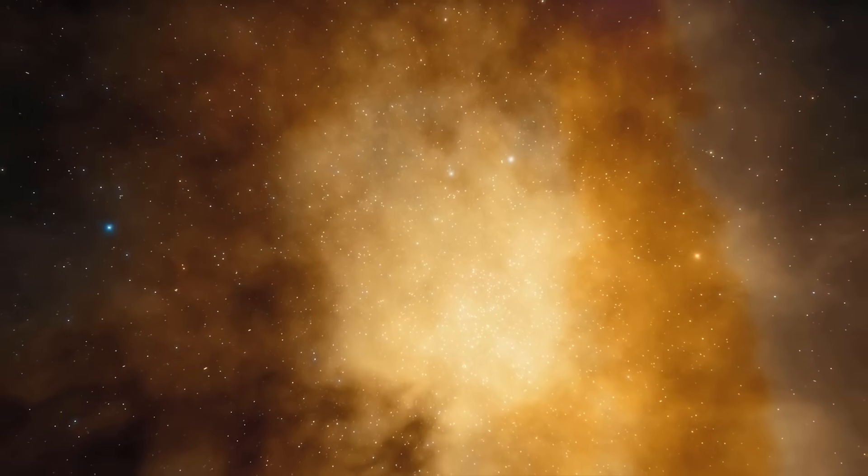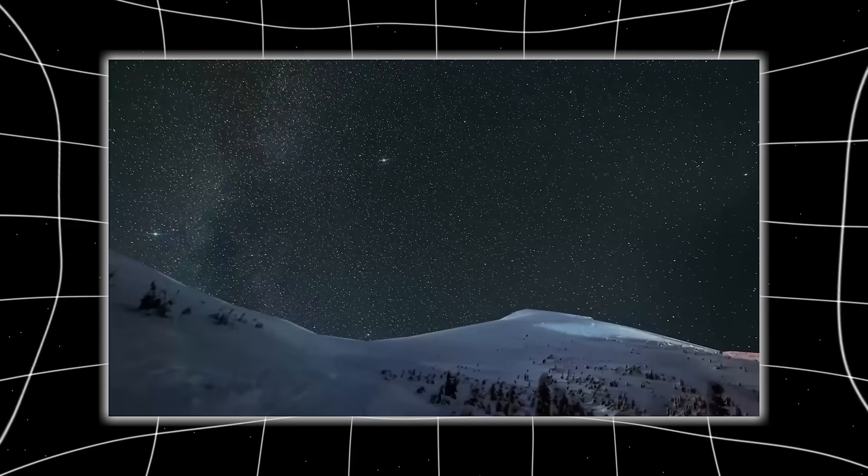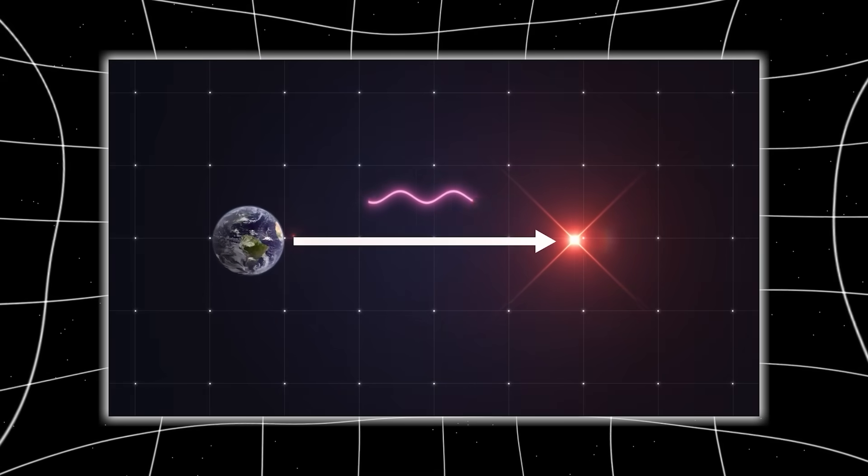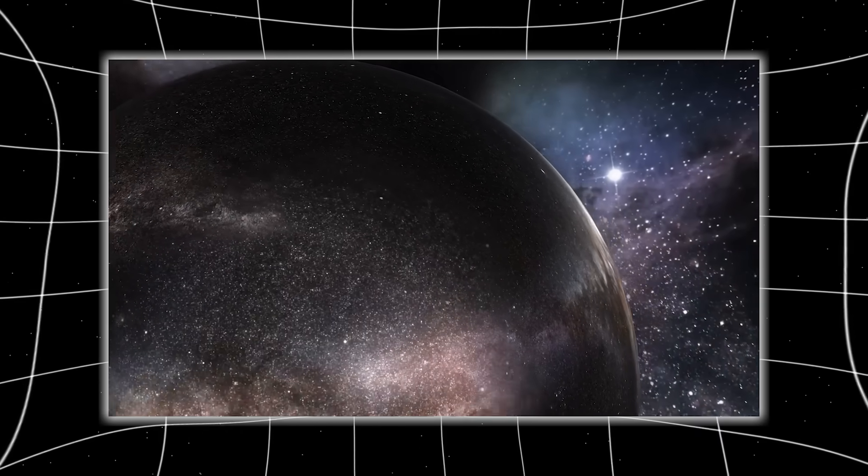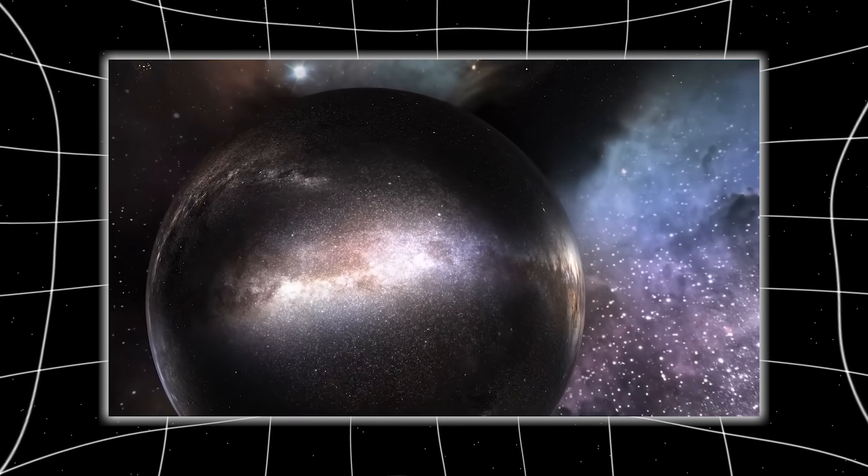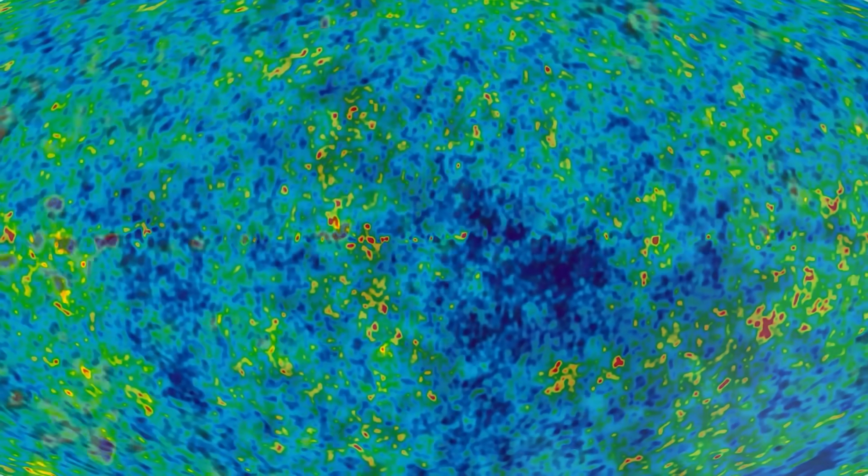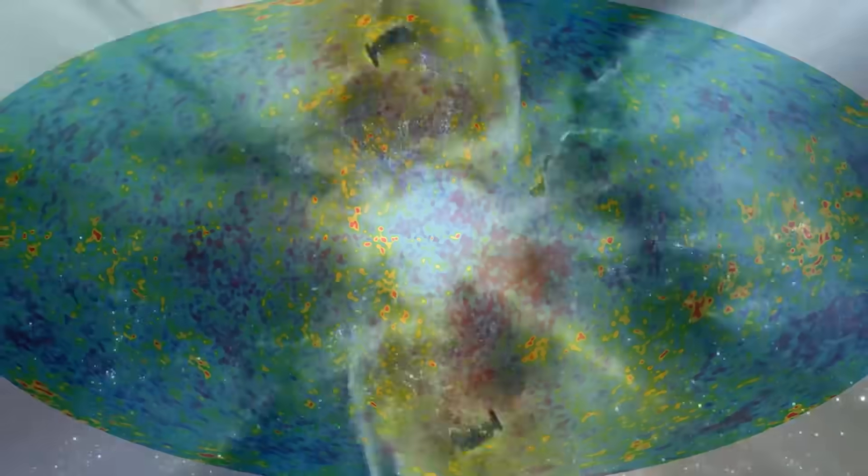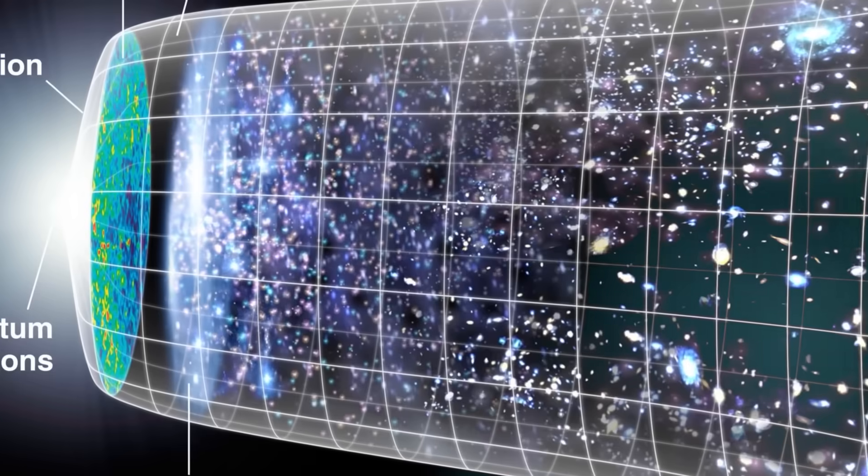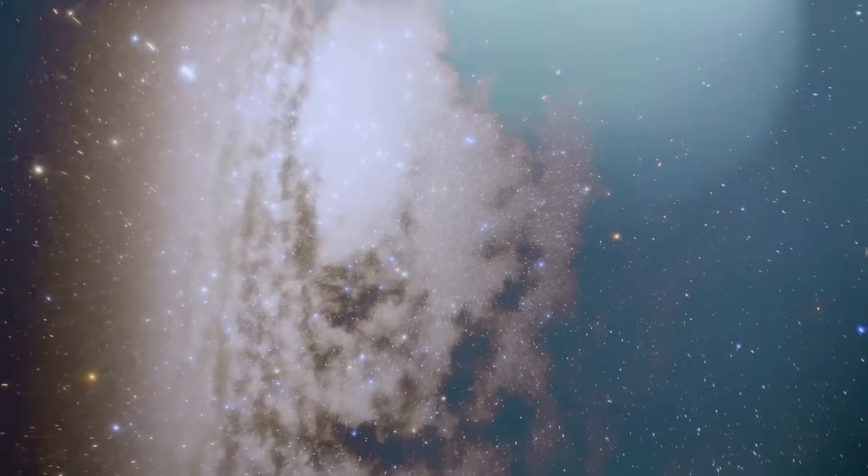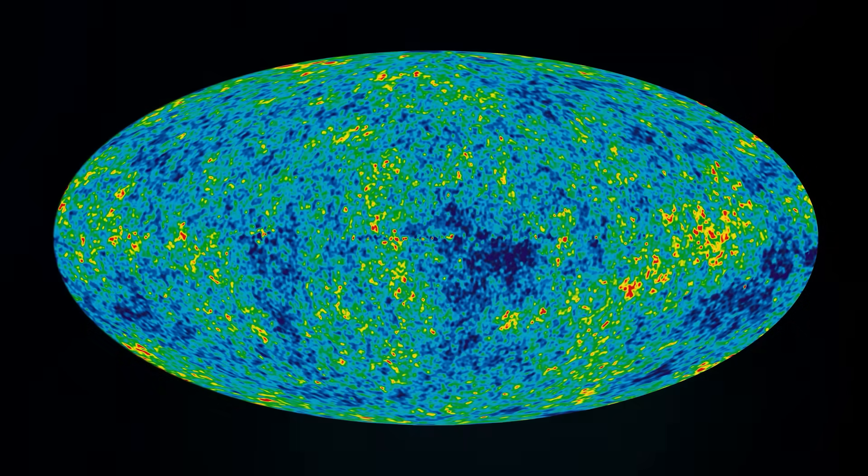Just when scientists thought things couldn't get more confounding, the center of one of these ancient galaxies delivered the most outrageous surprise of all. Nestled deep within its core was a supermassive black hole estimated to weigh over a billion times the mass of our sun. In today's universe, that would be incredible. But in the early universe, that's not just unlikely, it's cosmologically absurd. You see, black holes are thought to grow gradually. They begin as the remnants of massive stars, then feed over billions of years by consuming gas, dust, and other stars. Even the most optimistic simulations, with accelerated growth models and non-stop feeding, can't explain how such a colossal black hole could form within 400 million years of the Big Bang.